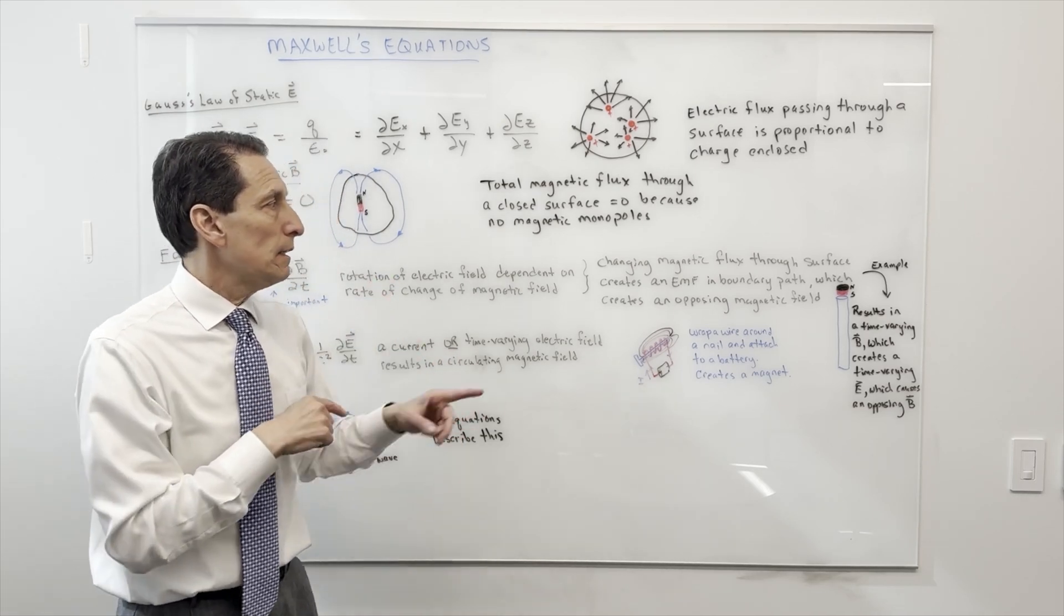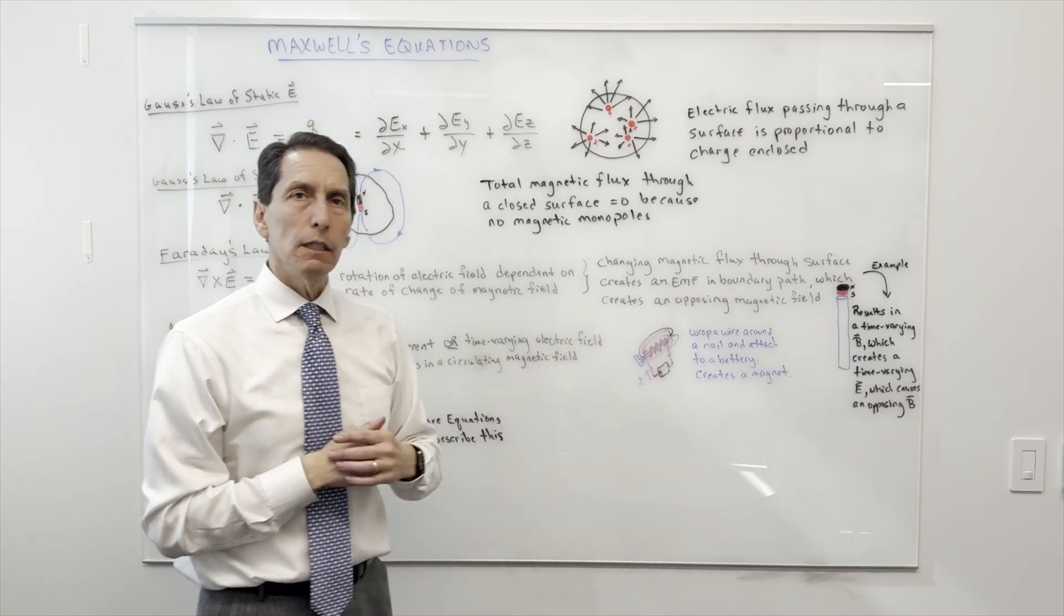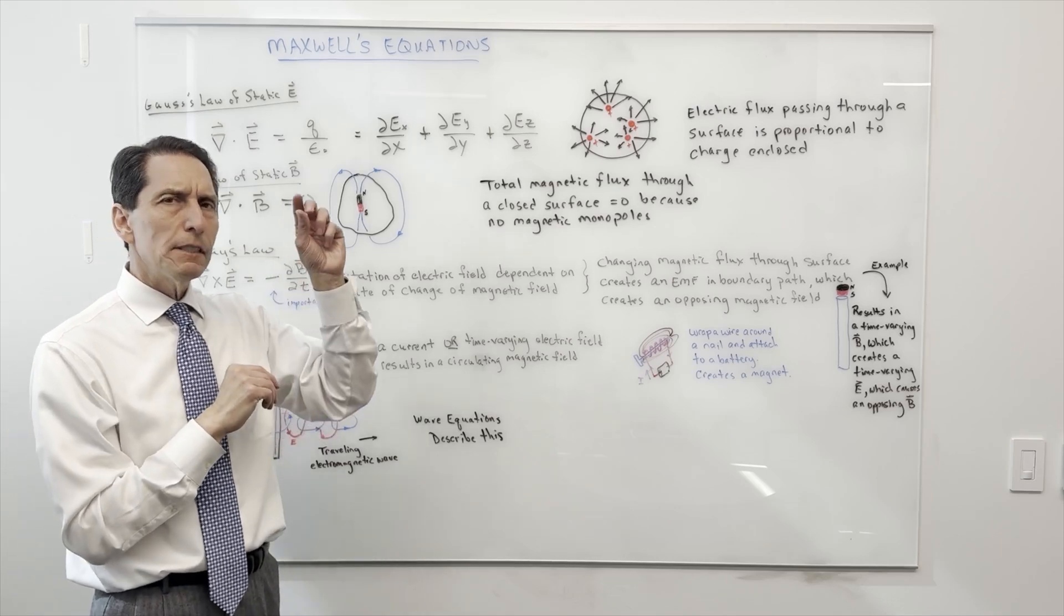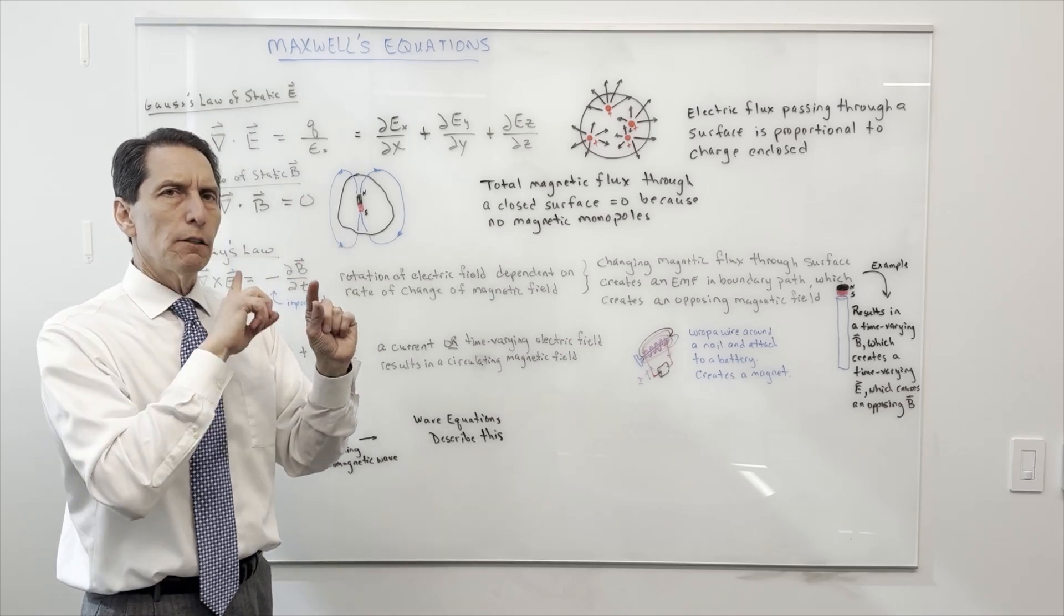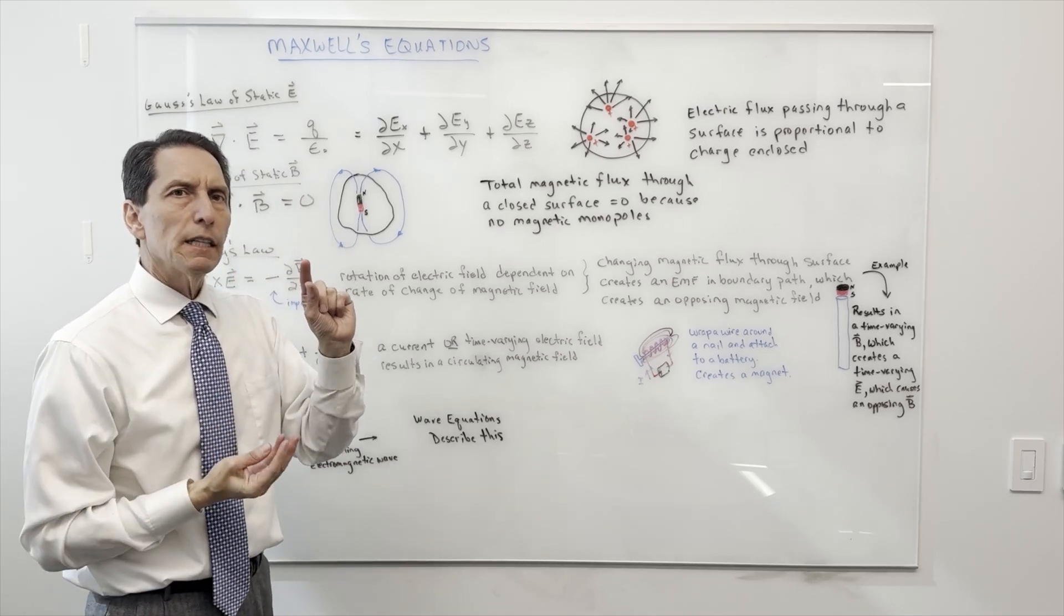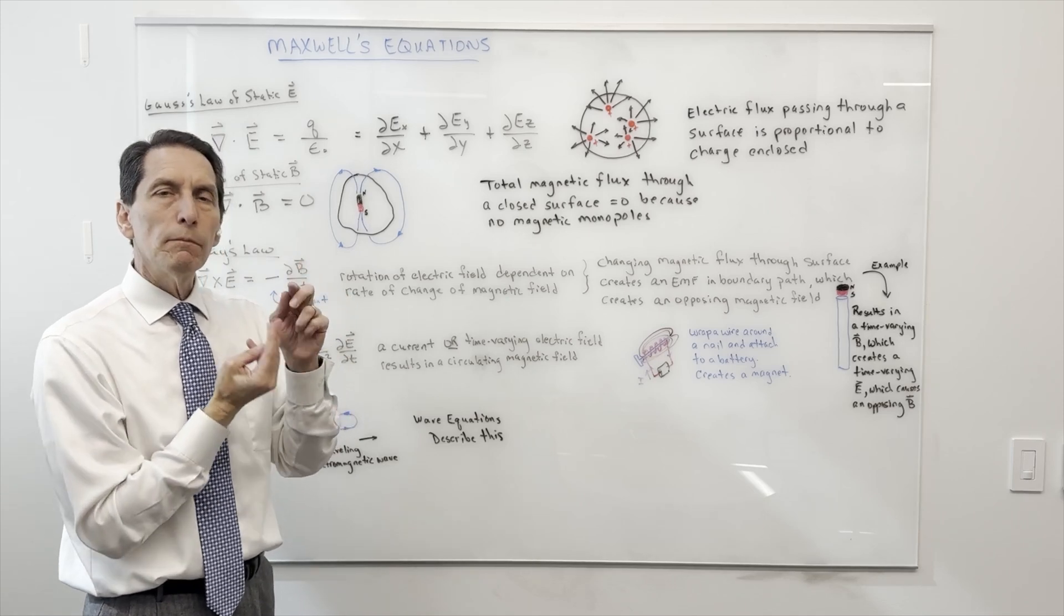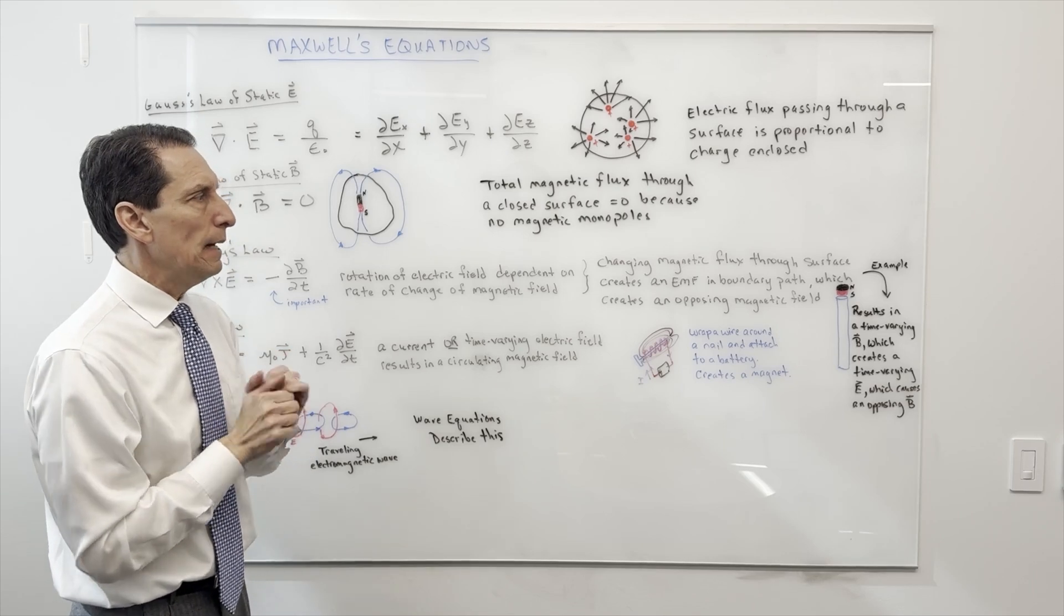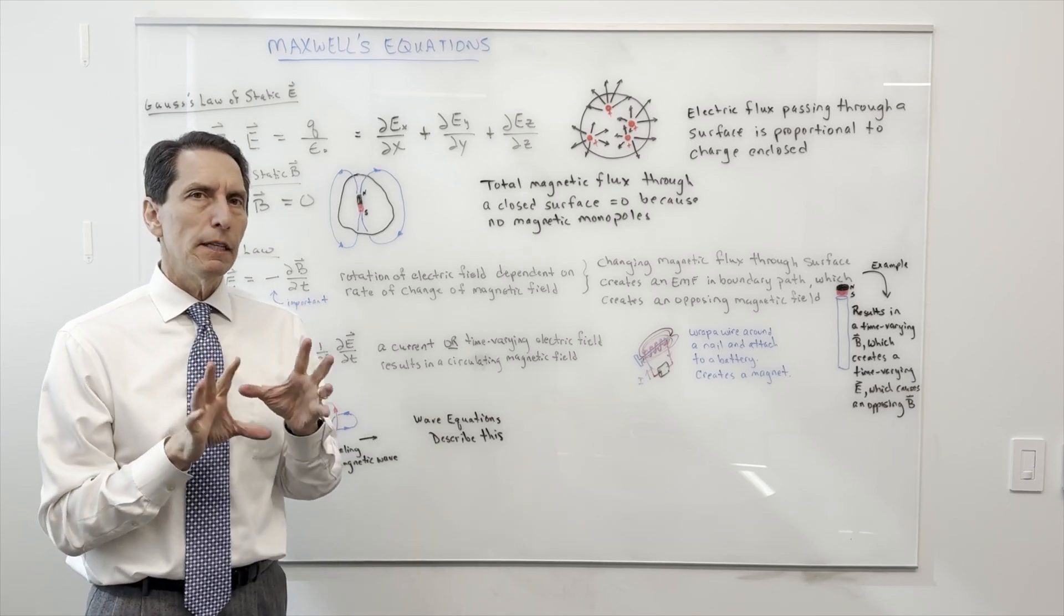That generates a current, and that current creates an opposing magnetic field. That may be a little more than you could digest there, but here's what it's saying: if I have a time-varying magnetic field, it creates a current which creates another magnetic field that opposes my first varying one. Why is that important? I'm going to show you this by just a little bit of a demonstration, and it's really pretty cool to show.